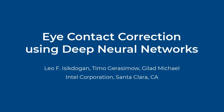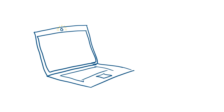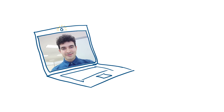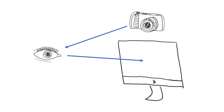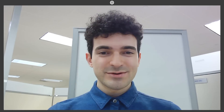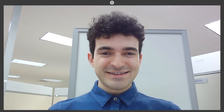Have you ever noticed that it's hard to have eye contact during a video call? This is because people don't usually look into the camera during a call. Instead, they look at the other person's image on their display, or sometimes they even look at their own preview image. In a typical video conferencing setup, the camera and the display are not aligned with each other. This camera-display-user geometry creates a gaze disparity that makes it hard to maintain eye contact and have a natural face-to-face conversation.